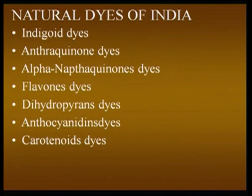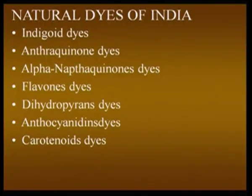Flavone dyes, dihydropyrane, and anthocyanidines — entire seasonal flowers are full of these anthocyanidine dyes, so they can be a good source of natural dyes. Carotenoid dyes are surely obtained from carrots, but saffron and annatto and many other species also yield substantial amounts of carotenoid dyes.